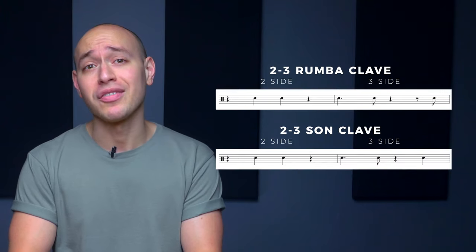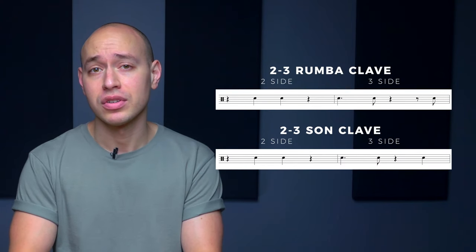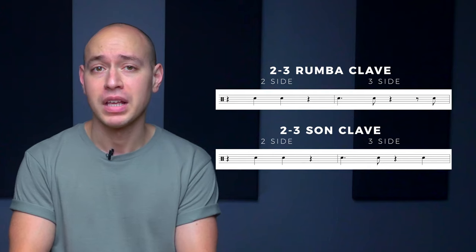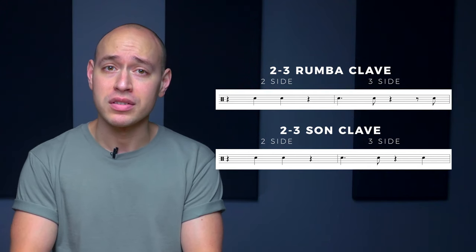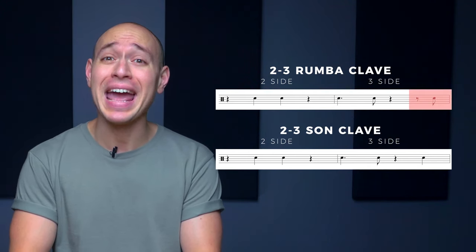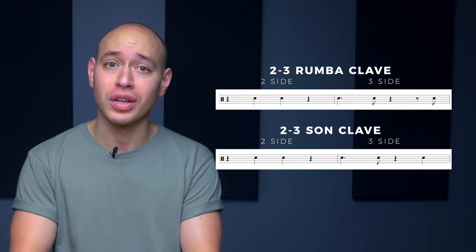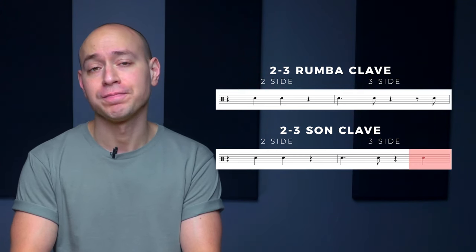The two side of either clave will contain two notes, and the three side of either clave will contain three notes. The only difference between these two patterns is that the rumba clave has a note on the and of 4 on the 3 side, while the son clave has a note that lands on beat 4 on the 3 side.